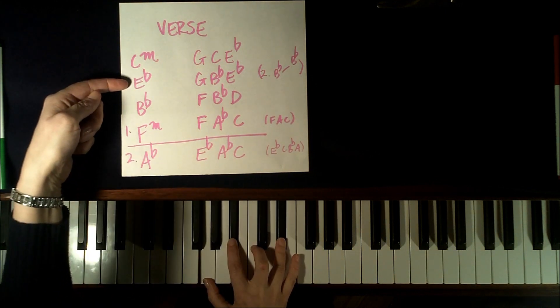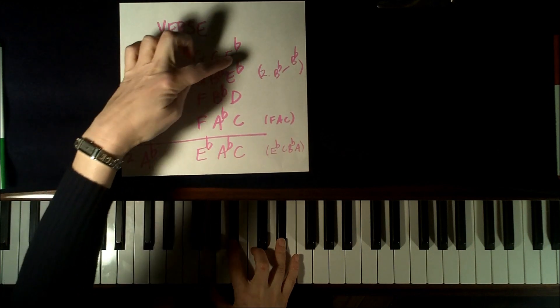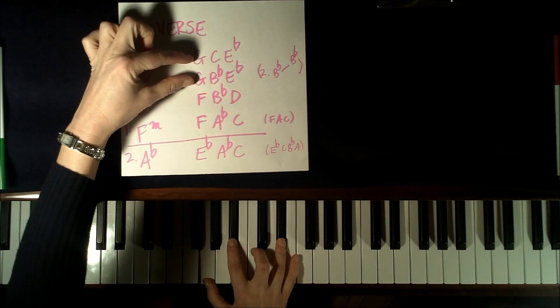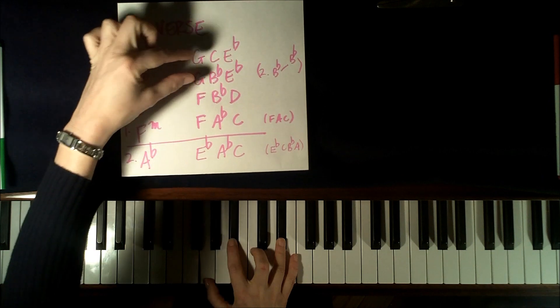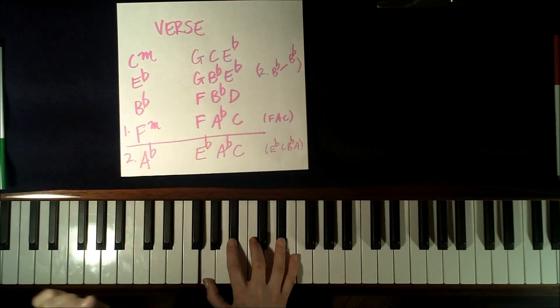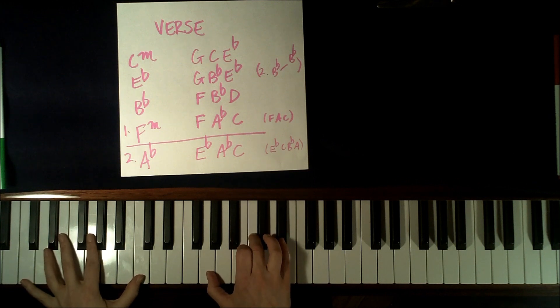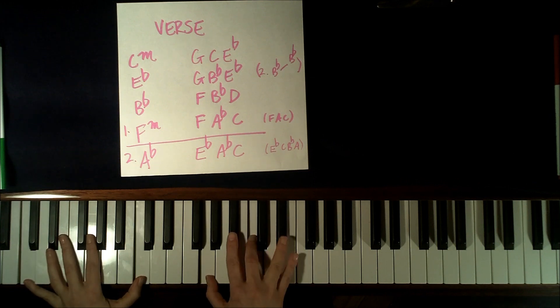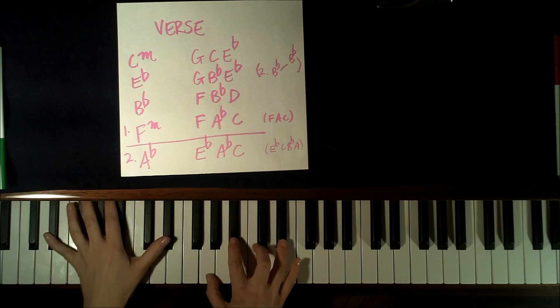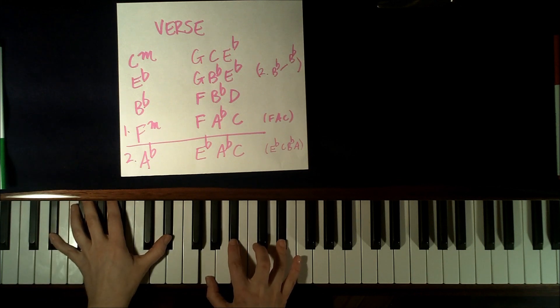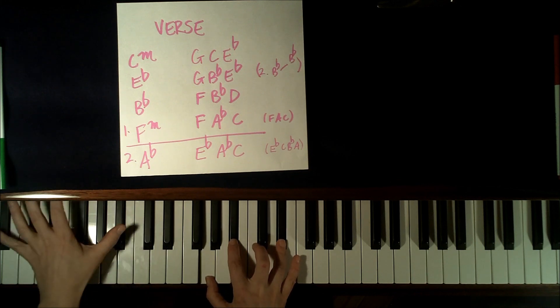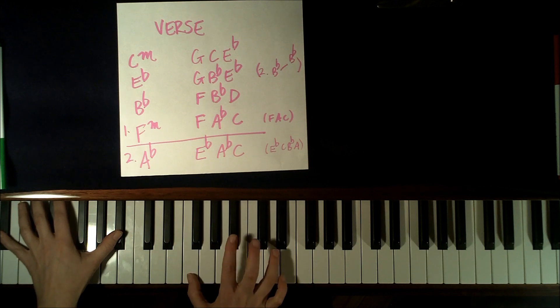And then as we move to the Eb, you'll see that I've kept two of my right-hand notes the same. I'm playing G and Eb in both of those chords. I'm only changing one note in the middle. So from the beginning, right hand is playing G, C, and Eb, and now my right hand is playing G and Eb with Bb. Now my left hand is going to go to a Bb chord while I play F, Bb, and D.